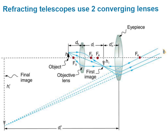For a refracting telescope the formation of images is very similar to that of the compound microscope. In this case, however, we're looking at a very distant object, which means the light rays come in fairly parallel. Our first image from the objective lens is going to be formed very close to the focal point of that objective lens, and it will be inverted and very small.